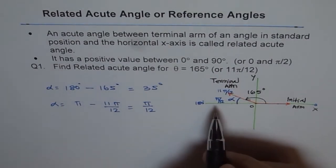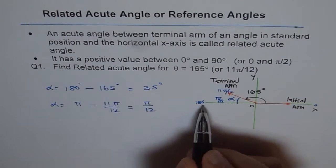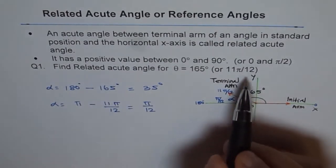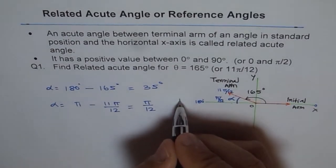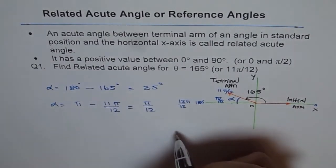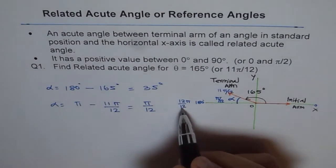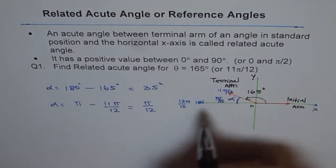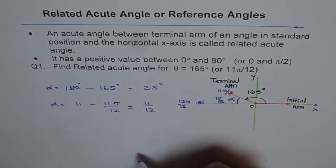At times, I prefer to write 180 degrees as not just π. If my divisions are 12, then I'll write this as 12π/12. Do you see that? It becomes simple maths. 12π/12 - 11π/12 gives me π/12.